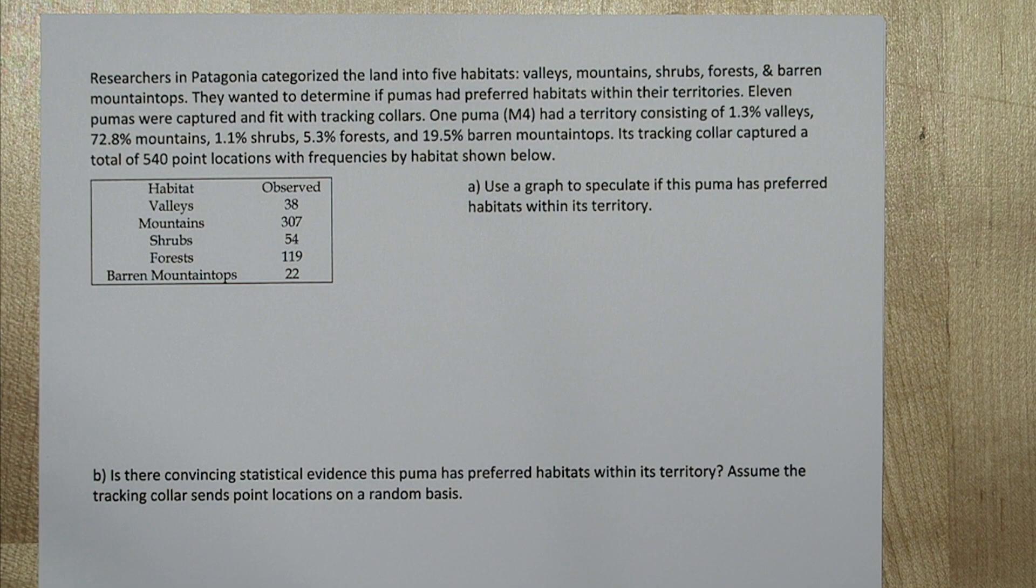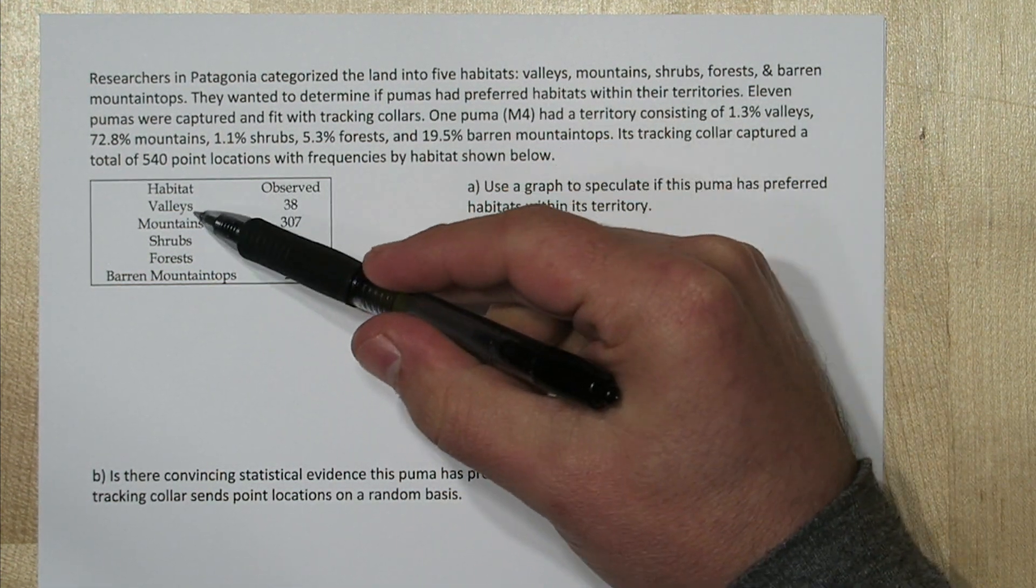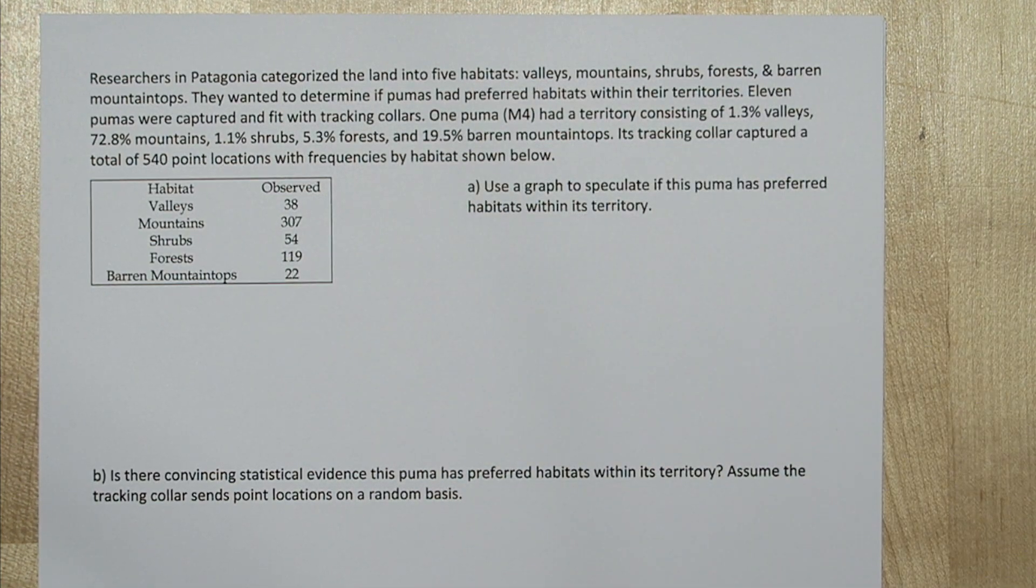For our graph, we want to compare what we observe with the puma with what we would expect. So the first thing we're going to do is take these observations and figure out what percent of the time the puma spent in each of these habitats.